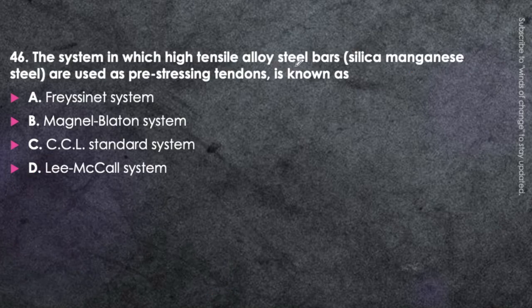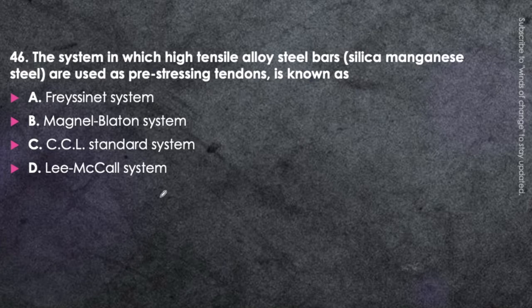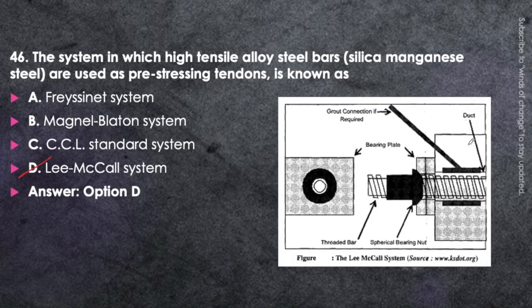Next question: The system in which high tensile alloy steel bars (silica manganese steel) are used as pre-stressing tendons is the Lee McCall system — option D. In this system, a bolt-type arrangement is used with a bearing plate at the end of the beam, a threaded bar under a spherical bearing nut, placed inside a duct. This is called the Lee McCall system of pre-stressing.